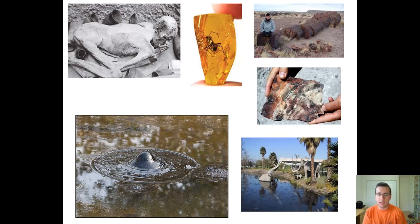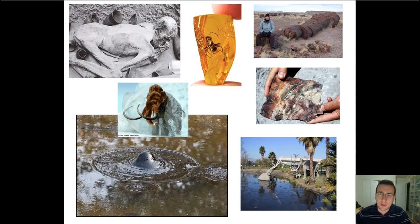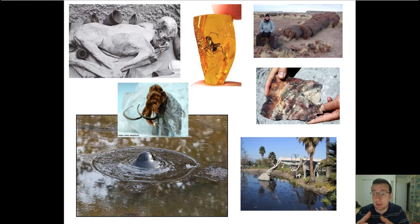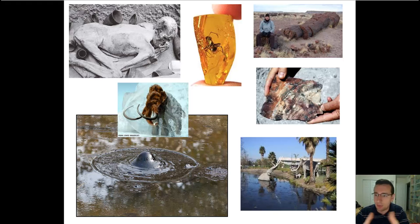Mummified remains have been found that are thousands and thousands of years old. There is also freezing, a process by which an organism becomes frozen — say, on a glacier — and then thousands of years later we can recover that organism from the ice, pretty much intact, as long as the ice preserved its contents. We have found baby mammoths and even whole mammoths preserved in that manner, along with other animals found preserved in the ice.